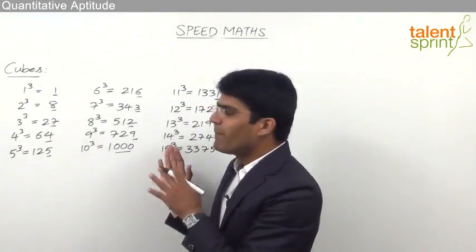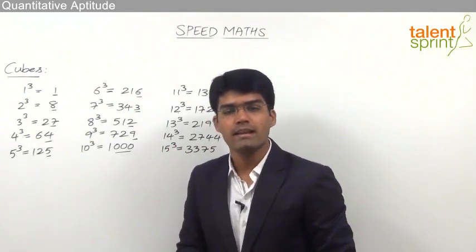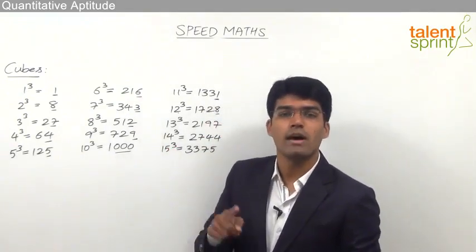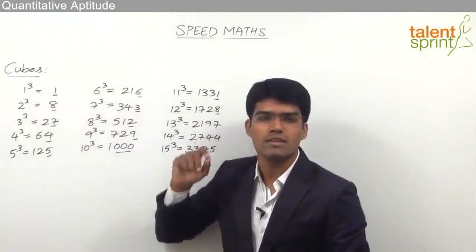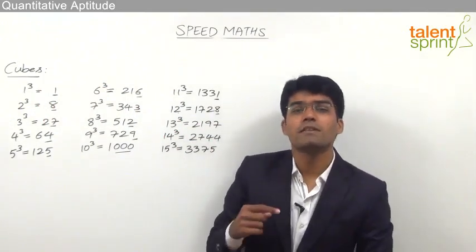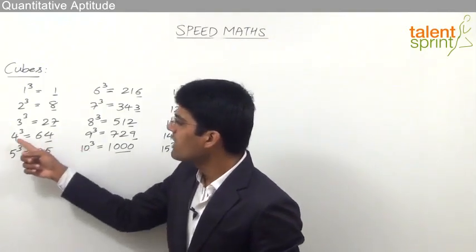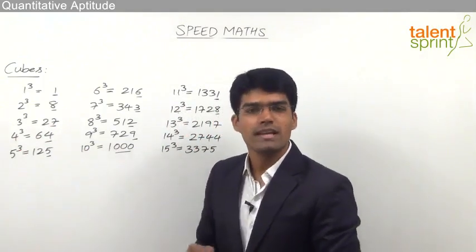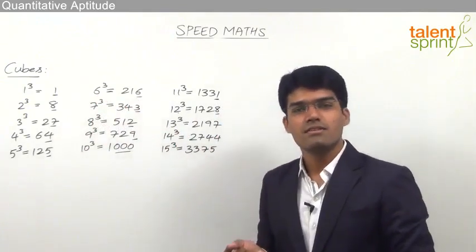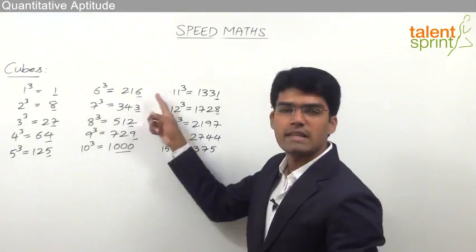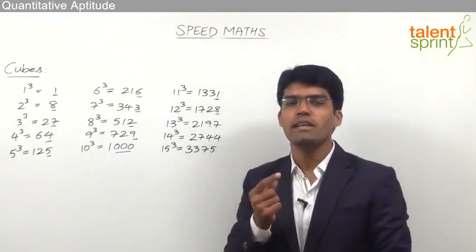This pattern is very simple when compared to the pattern of square roots. In square roots, when a number ends with 1, the square root may end with 1 or 9. But in cube roots, when a number ends with 1, the only possibility is that the cube root also ends with 1. Similarly, when a number ends with 4, the square root may end with 2 or 8, but in cube roots the answer also ends with 4. When a number ends with 6, the square root ends with 4 or 6, but the cube root ends with 6. So it is very easy in cube roots because we have only one possibility.